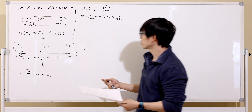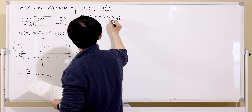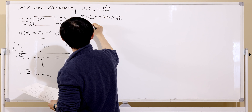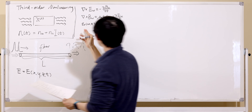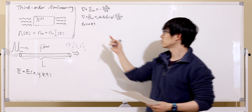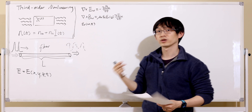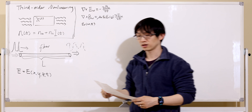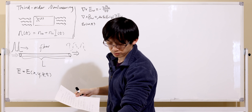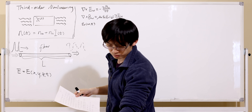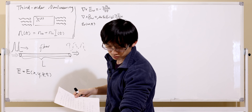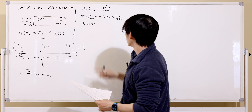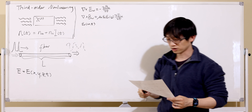Dispersion is hidden in the frequency dependence of the refractive index: r(omega, t). The omega component means the refractive index depends on frequency or wavelength. The t component comes from the Kerr effect.